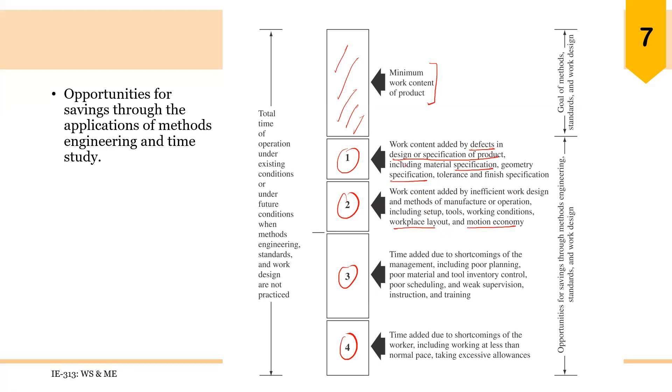Time is also added to the basic work content because of shortcomings on the part of management, including poor planning, poor material and tool inventory control, poor scheduling and so on. So production planning or production control is not proper, and that also results in wasted time.